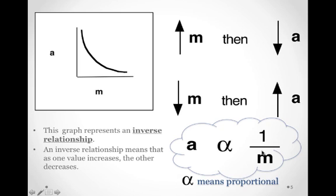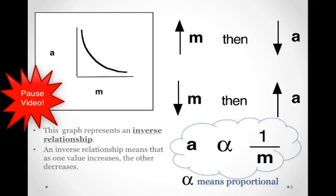So, in other words, as you can see from the equation here or the proportionality, as the mass gets bigger and bigger here, one divided by something that's getting bigger, this is then getting smaller. And that's an inverse variation, an inverse relationship for mass and acceleration. So please take notes on this.